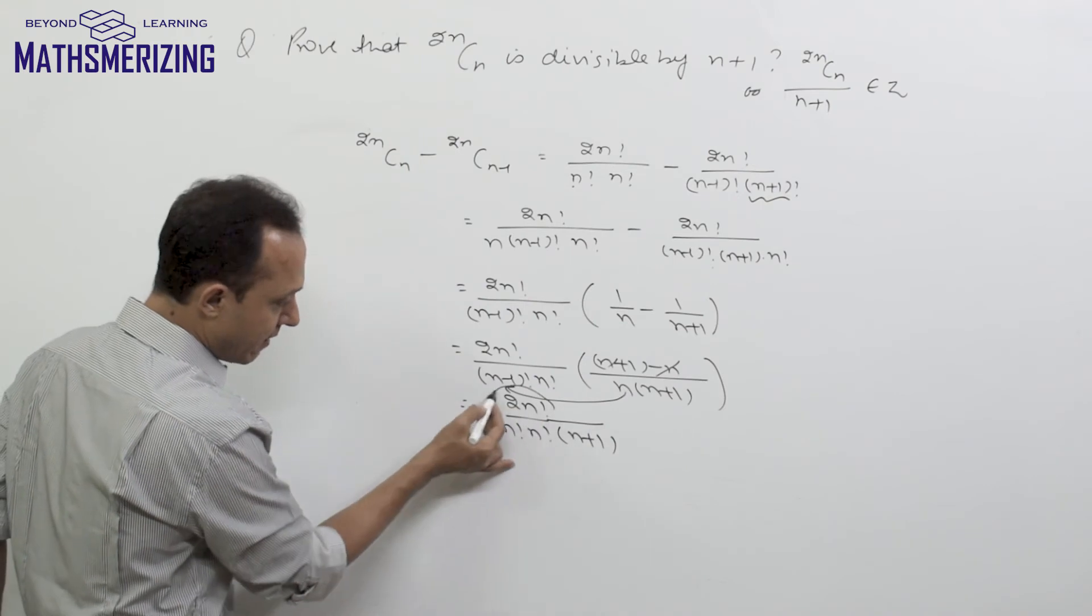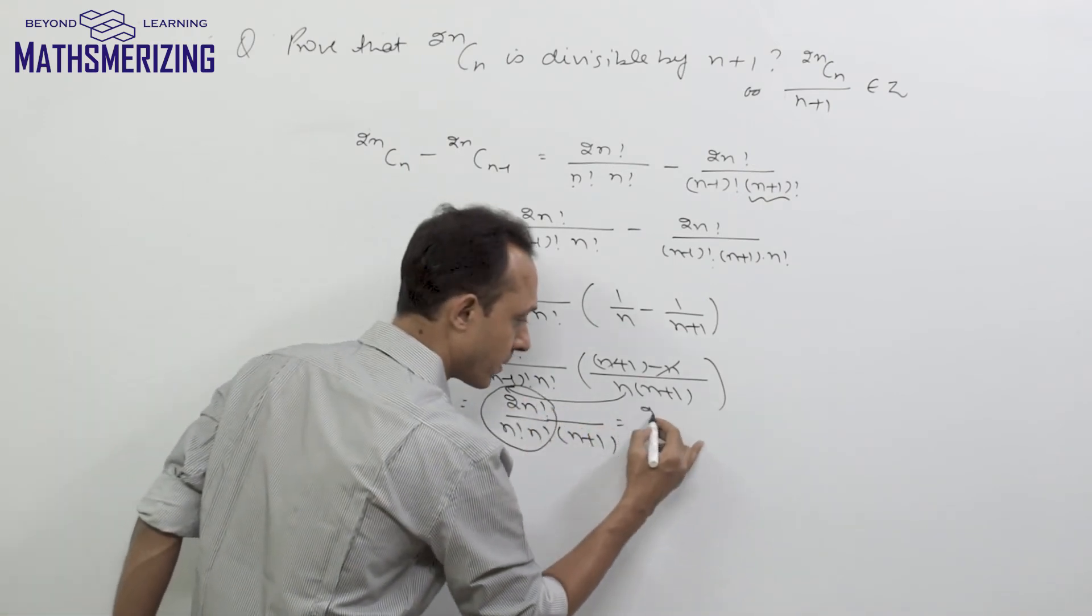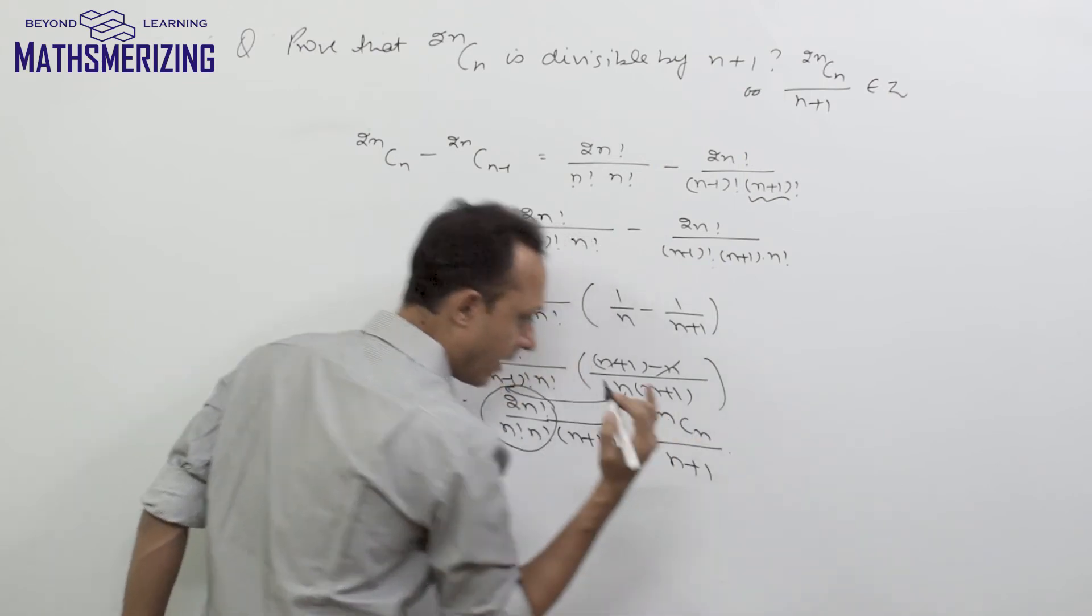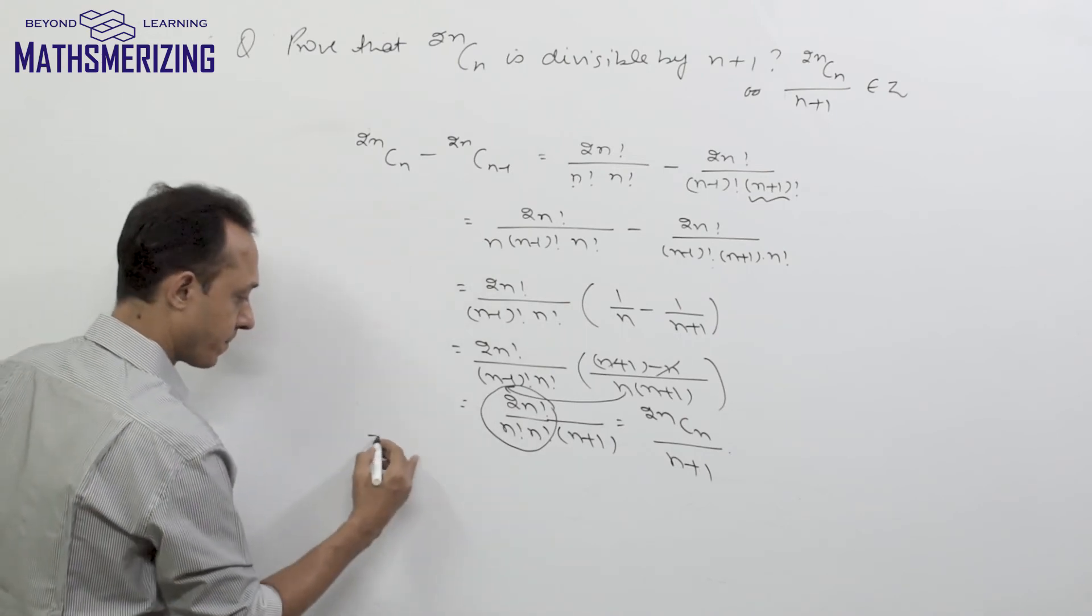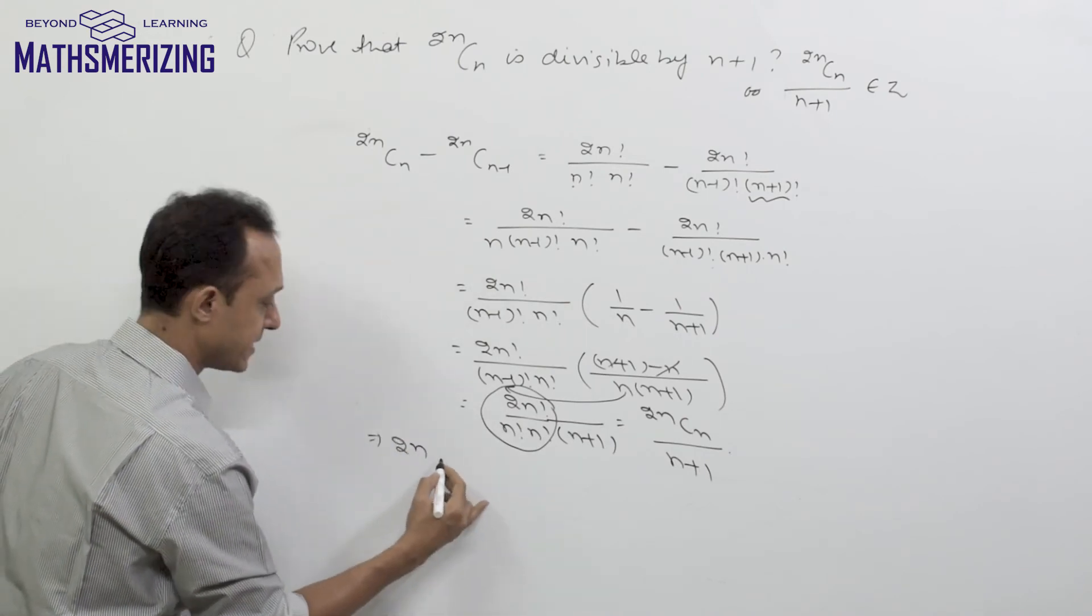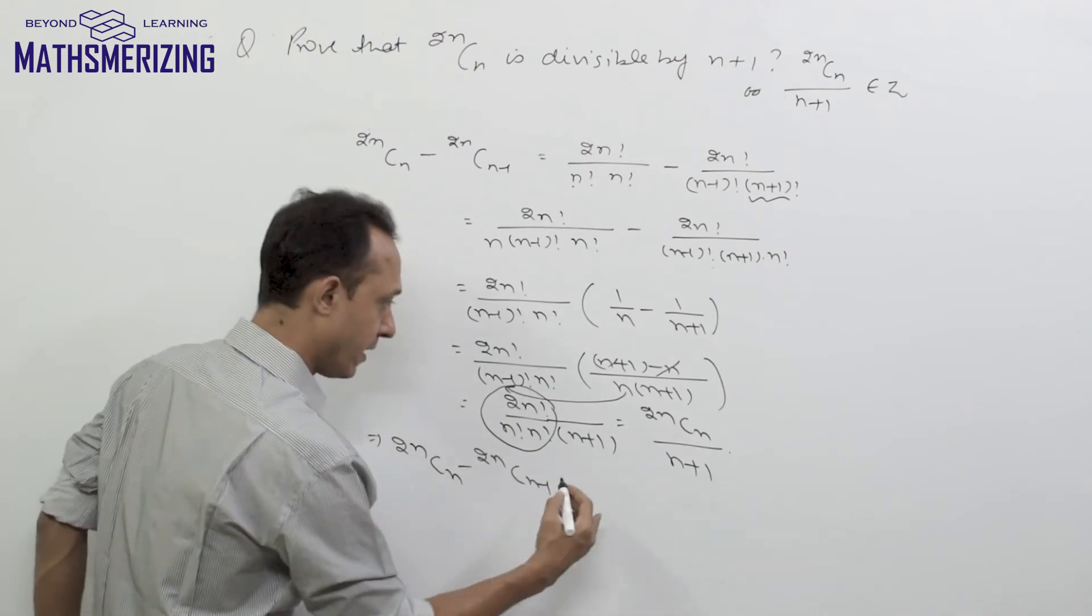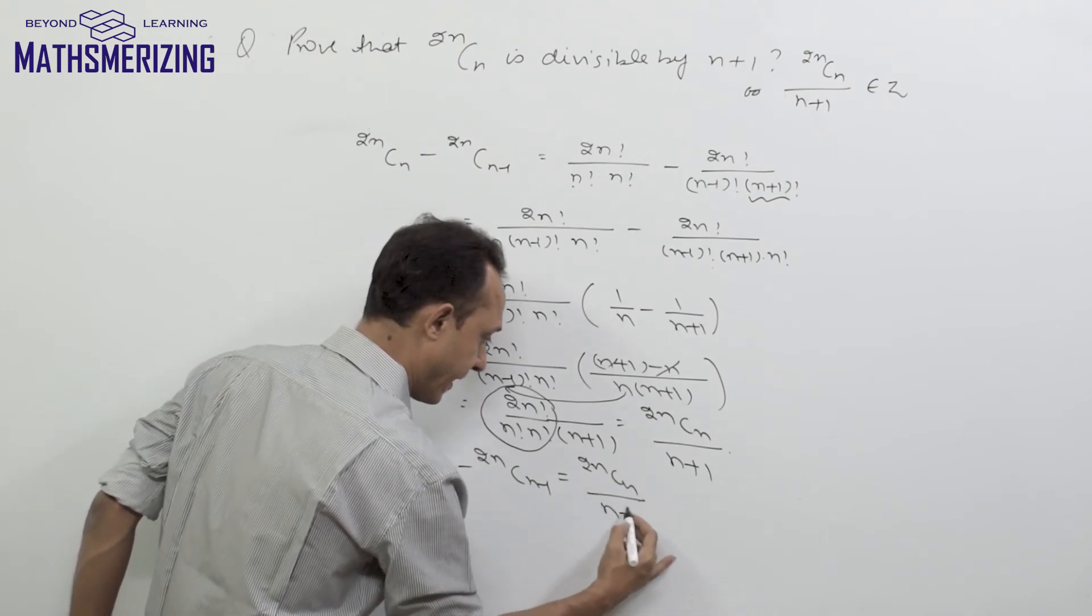Now (2n)!/(n!·n!) is nothing but 2nCn. So from here the result is 2nCn - 2nCn-1 = 2nCn/(n+1).